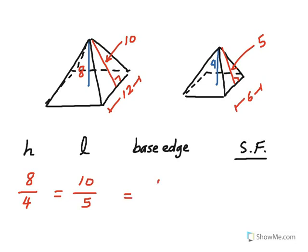And then base edge to base edge. On the left, base edge is 12. On the right, it's 6. So again, those are all the same. So I can see that the scale factor of big to small or left to right for these two pyramids is 2 to 1.